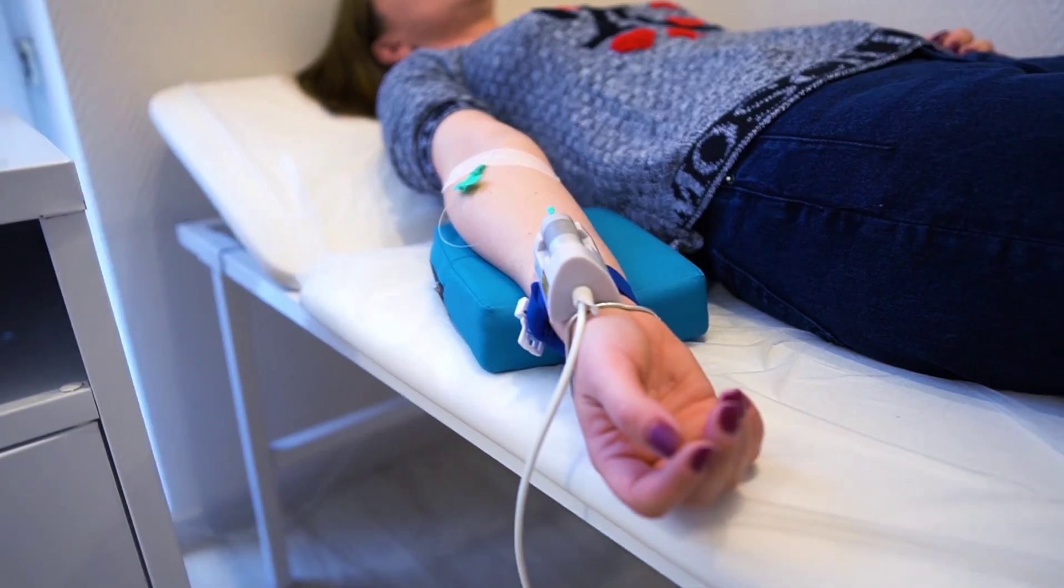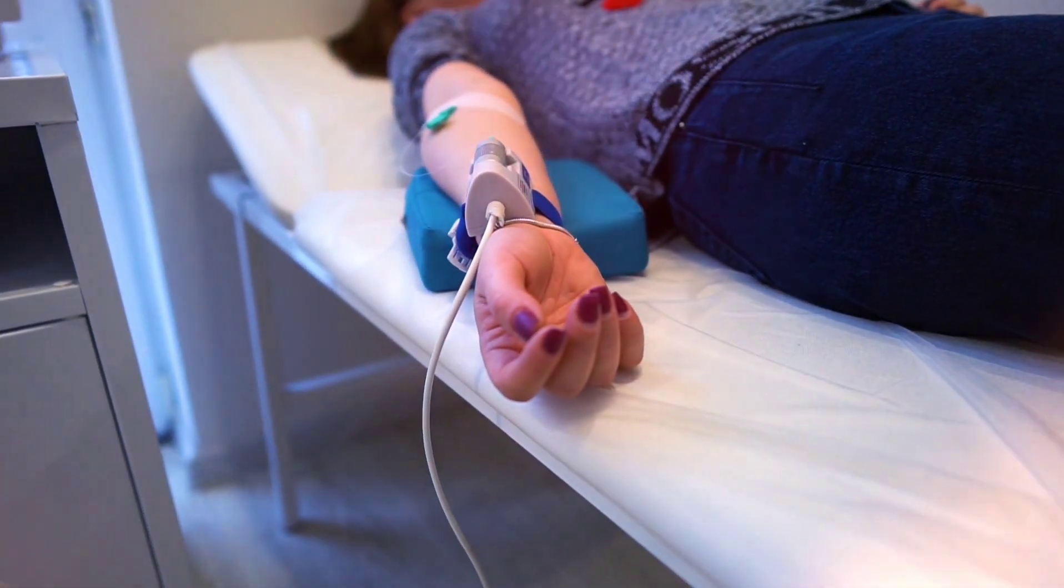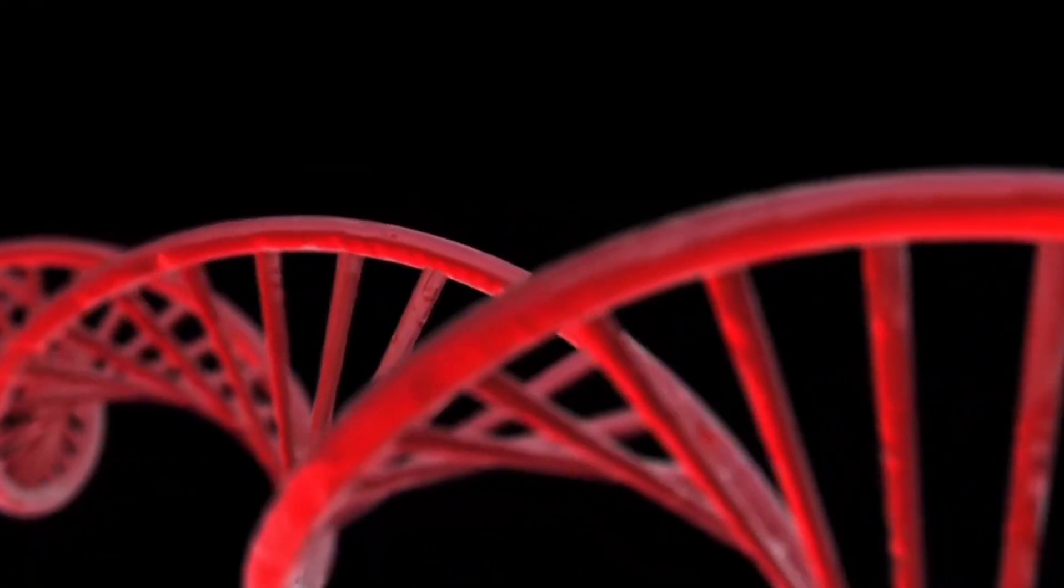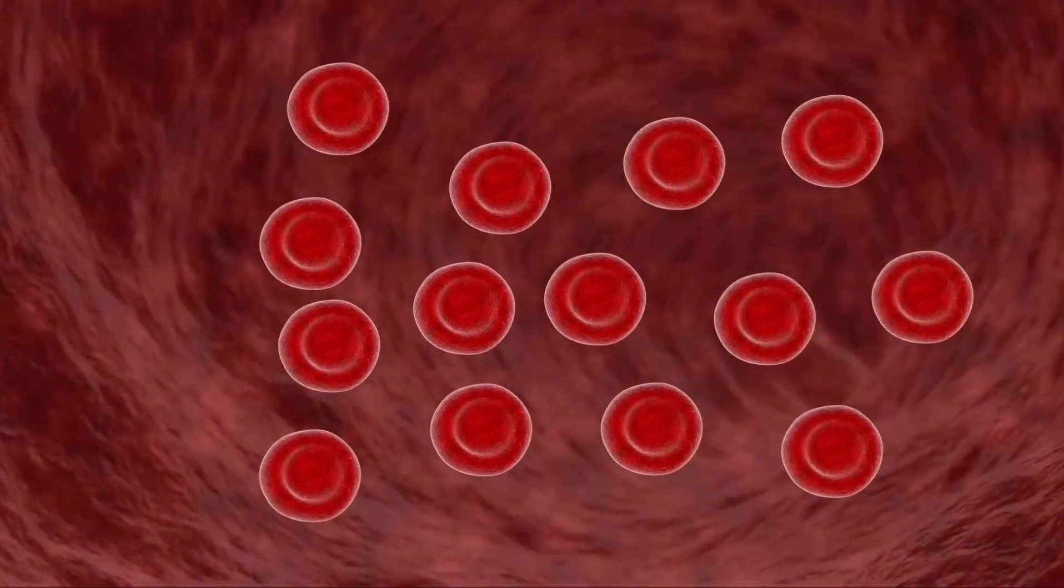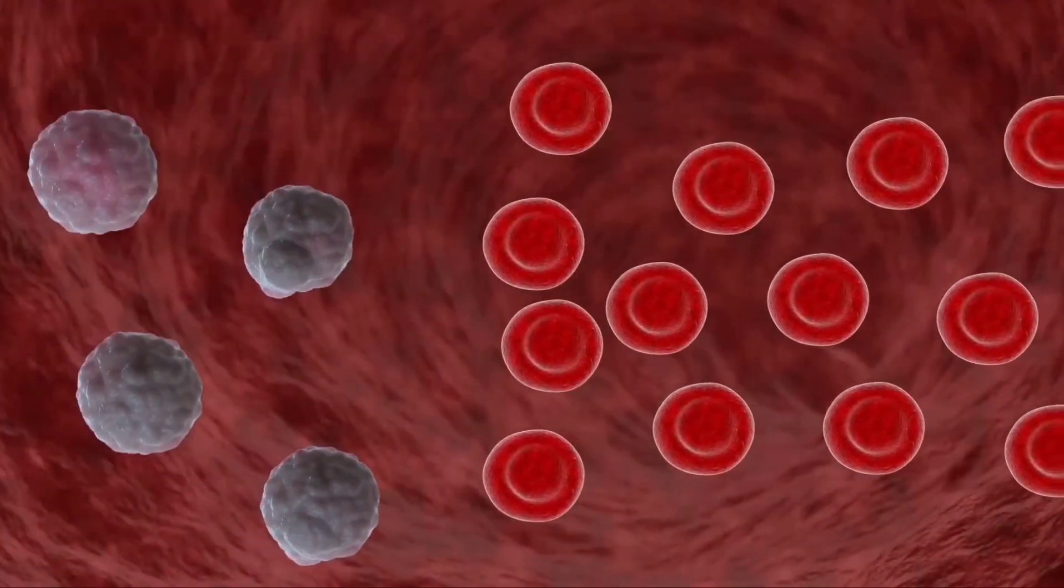Fact 8. People with AB blood might have slightly different reactions to stress. Some studies have shown that AB individuals may have higher levels of cortisol, the stress hormone. This doesn't mean they're more stressed, but their bodies might respond to stress differently. It's not a huge difference, but it's a small biological detail that sets them apart.